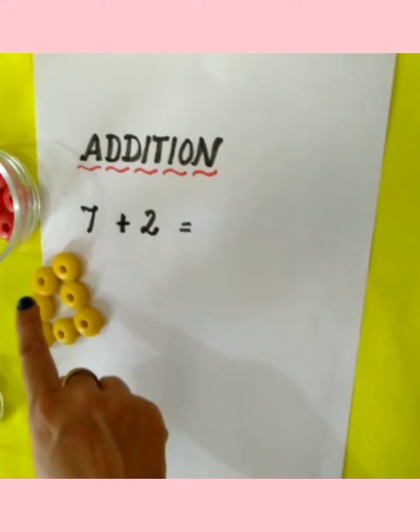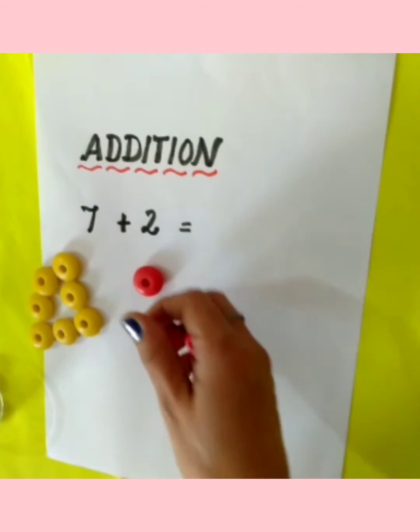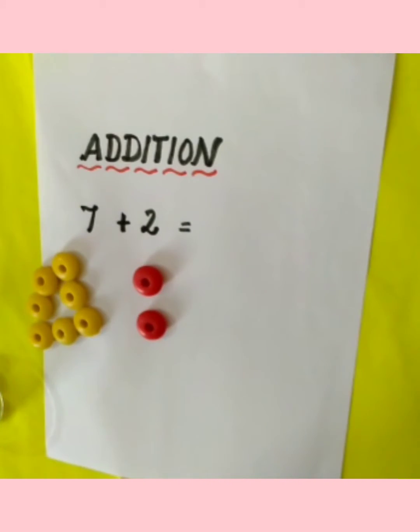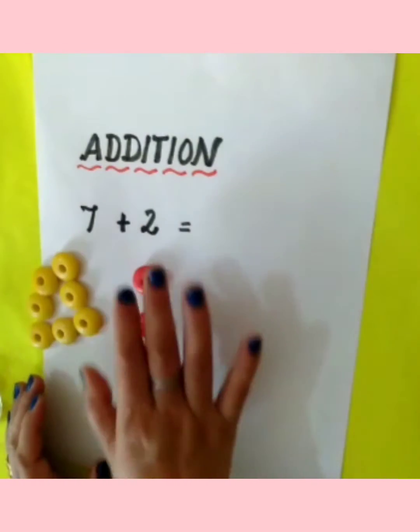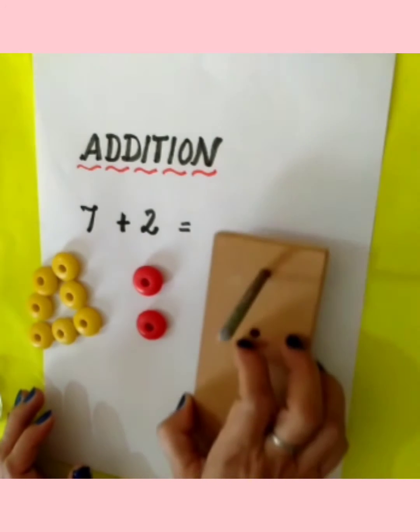One, two, three, four, five, six, seven yellow colored beads. Now two beads of red color. So how many beads do we have all together or in total? When we add the numbers we get total.